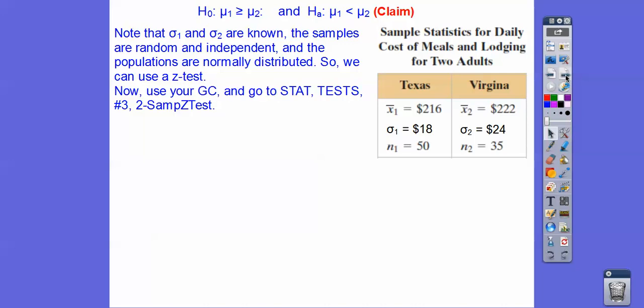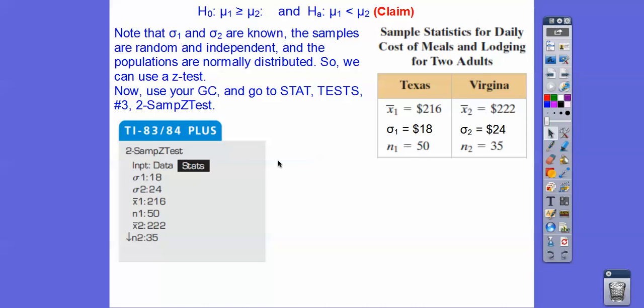Now let's go to your graphing calculators and scroll over to hit STAT and then scroll over to TESTS. And you'll see on number 3 it says a two-sample z-test.